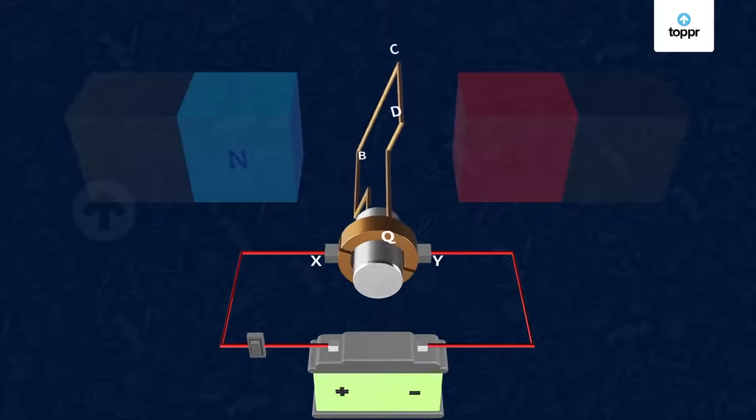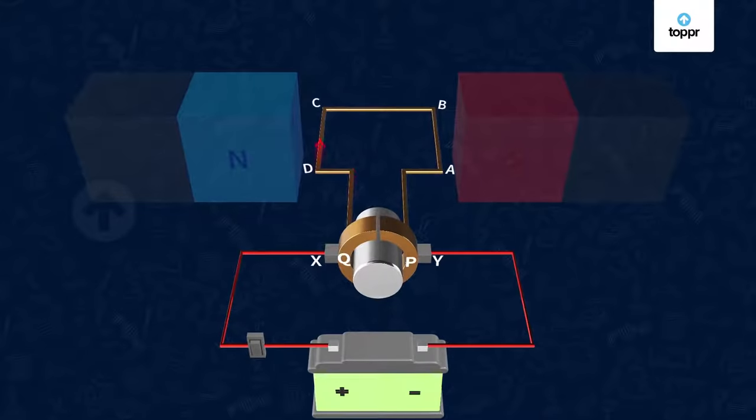At half rotation, Q makes contact with brush X and P makes contact with brush Y, resulting in the direction of current in the coil being reversed. Therefore, the direction of current in the coil will be DCBA.